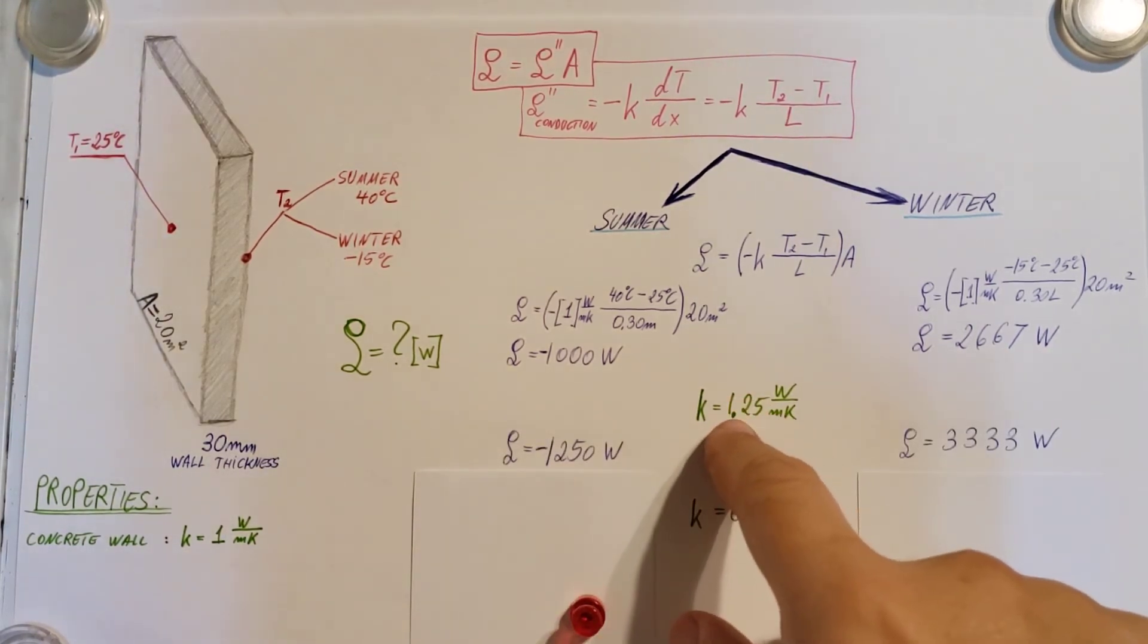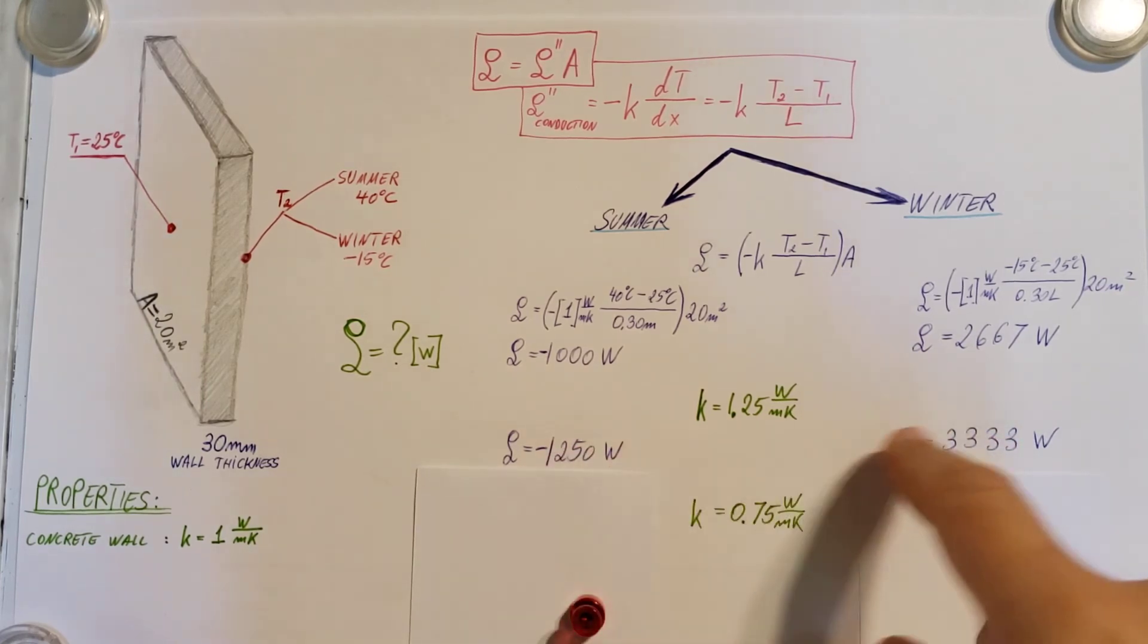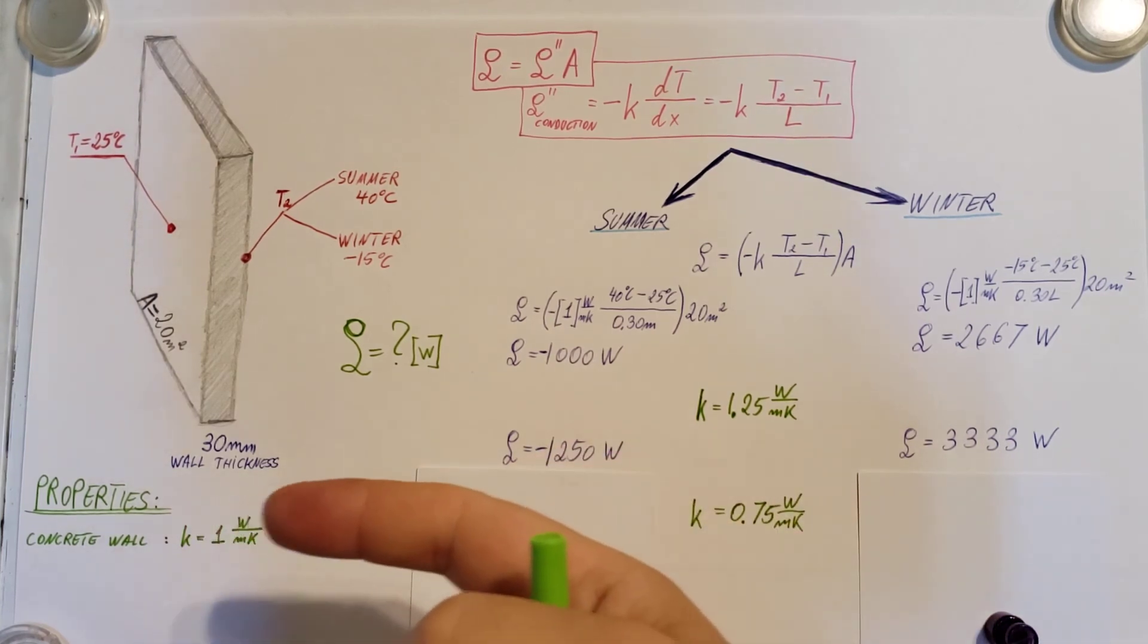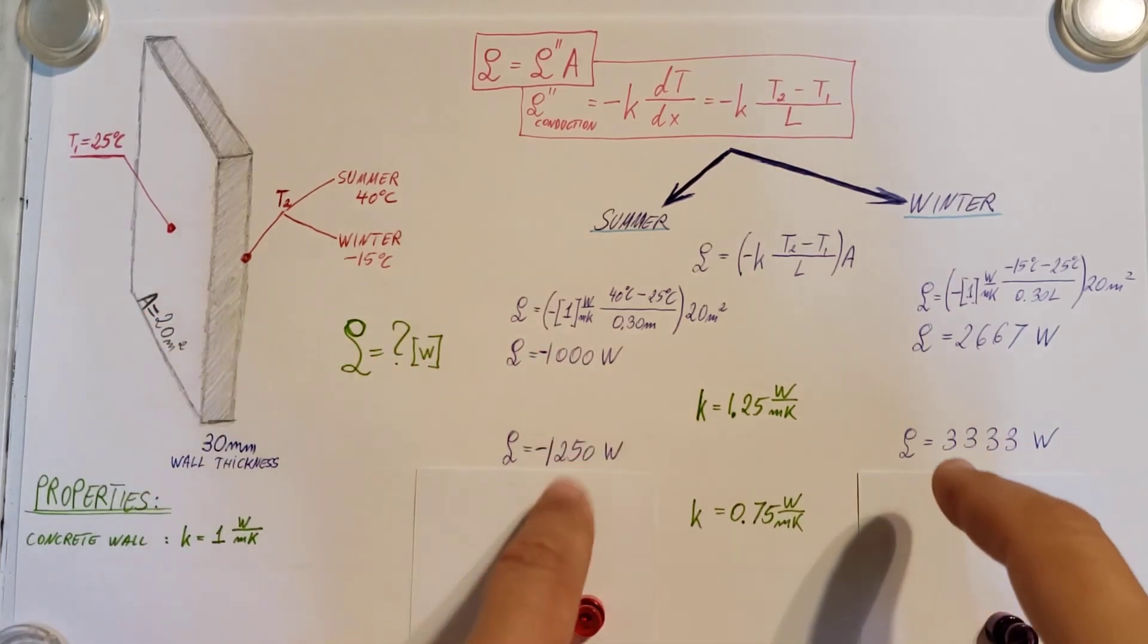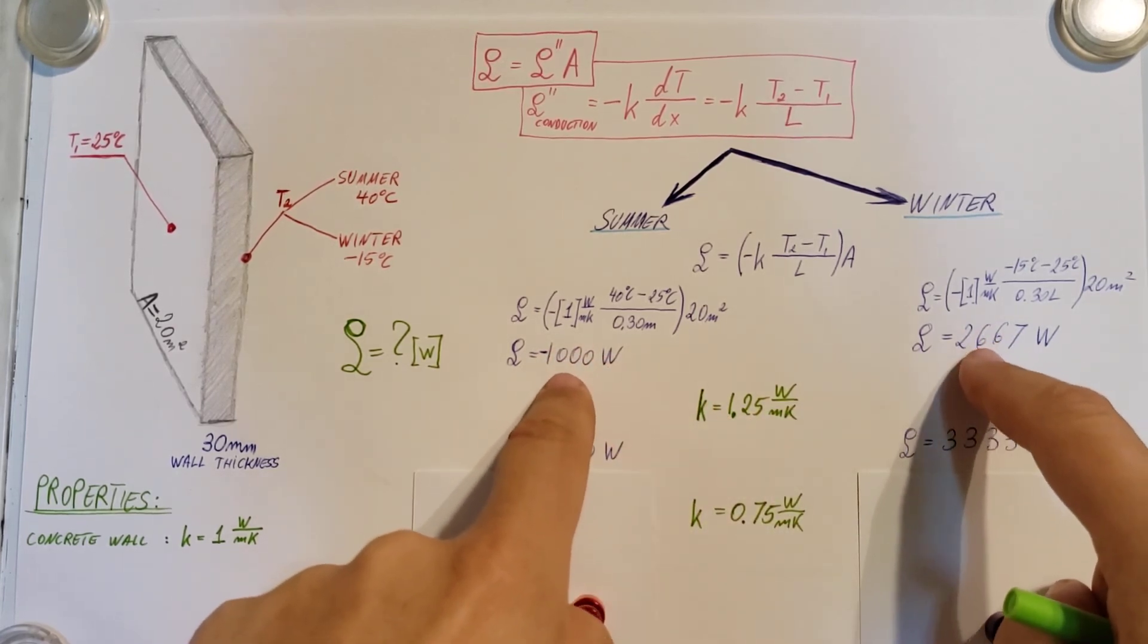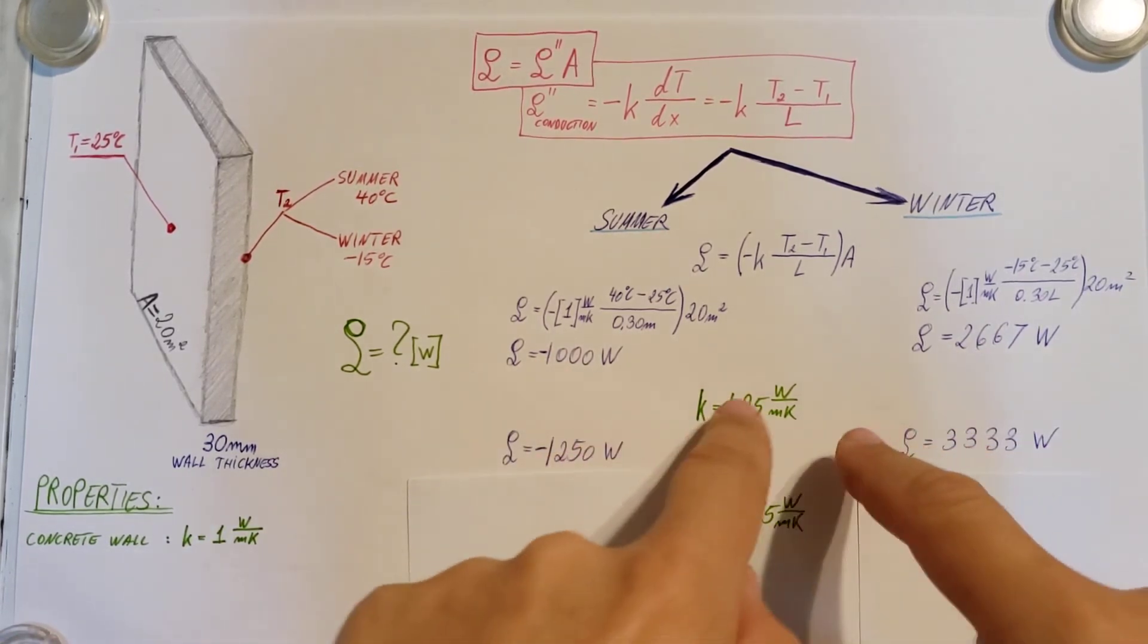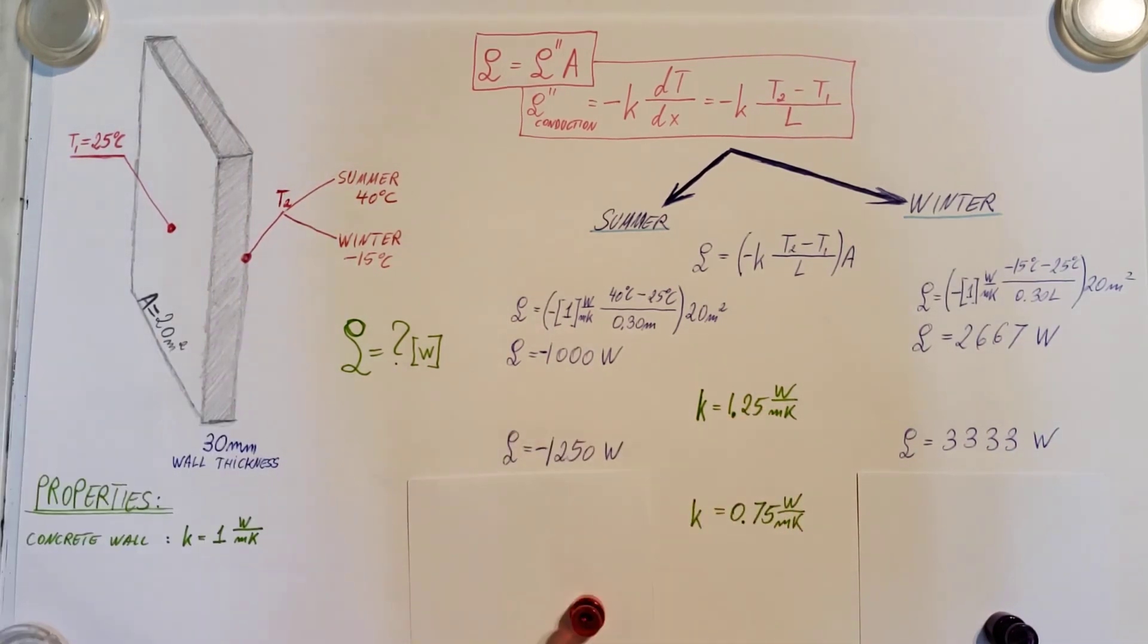So for the 1.25, a higher conductivity coefficient would give us that all of these, both of these numbers, the heat loss either way, going out from T1 to T2 or T2 to T1, depending which situation we are in. But we can see that higher coefficient gave us higher values than here. Here we had a K equal 1, here 1.25. We had a higher conductivity. So it allowed more heat to pass.